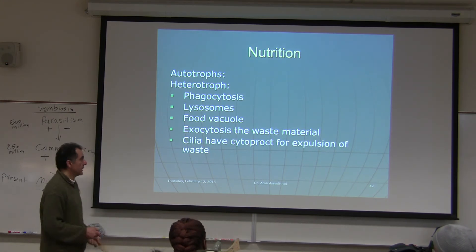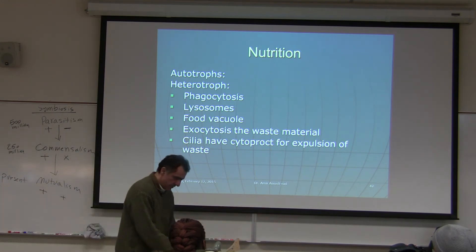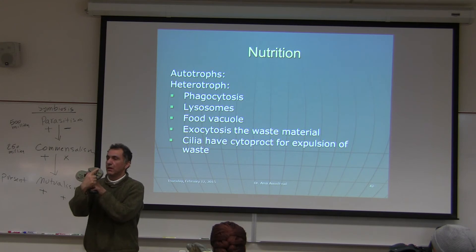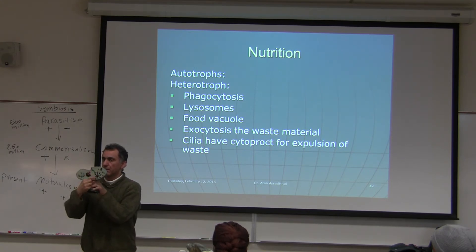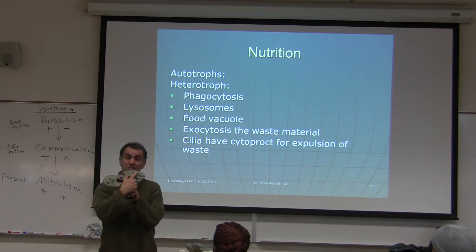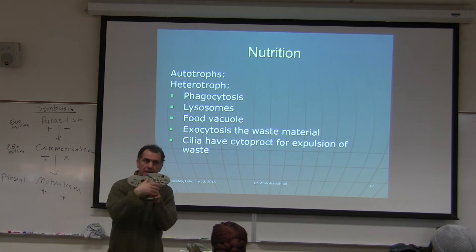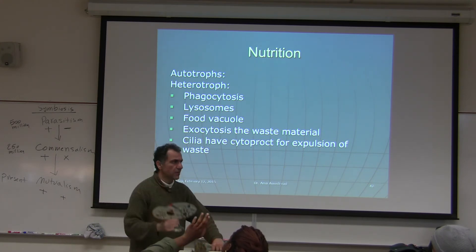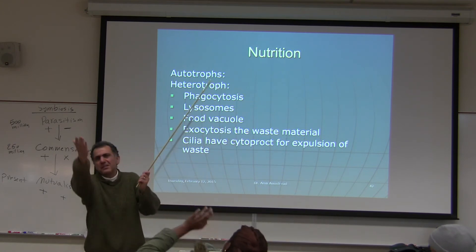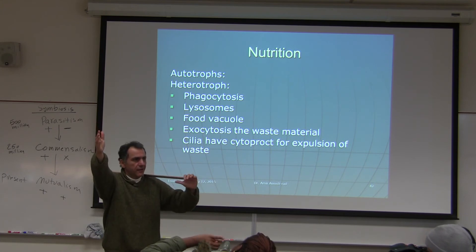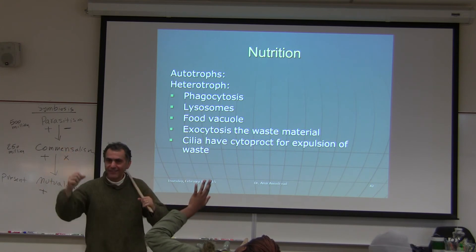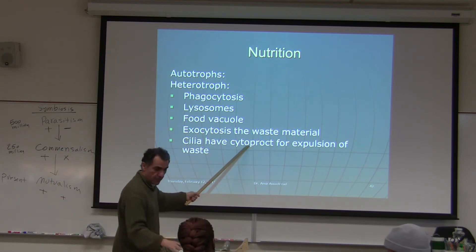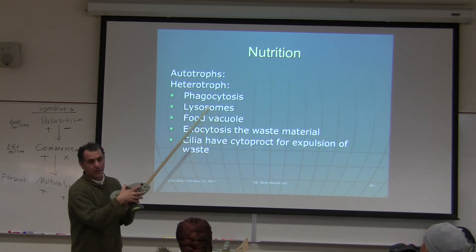Cilia have a cytoproct for expulsion of solid waste material. The cytoproct gets rid of solid food waste — you can see it on the model. Water is removed via the contractile vacuole system, while solid metabolic waste is expelled through the cytoproct. Pinocytosis means cell drinking; phagocytosis means cell eating.